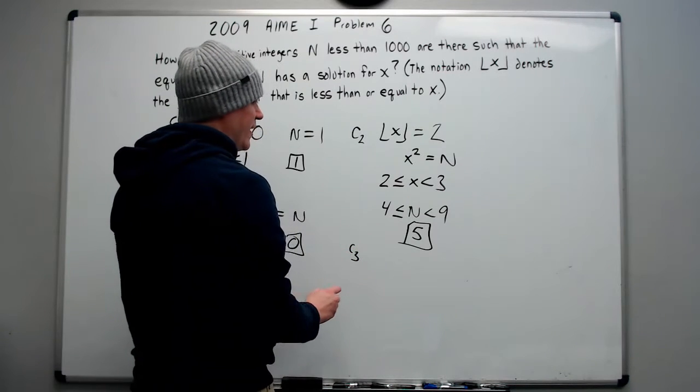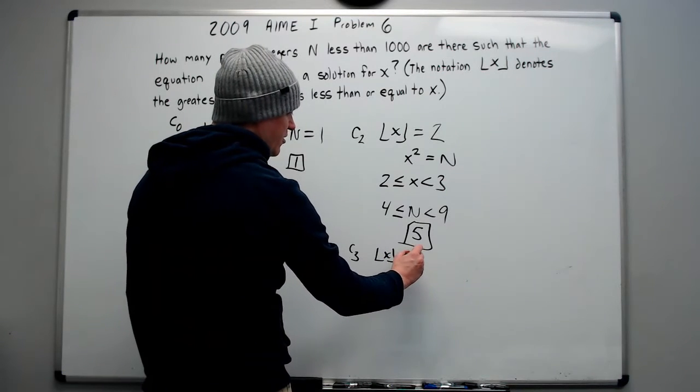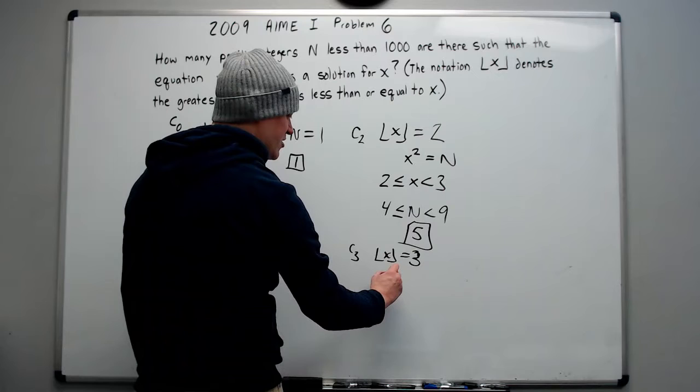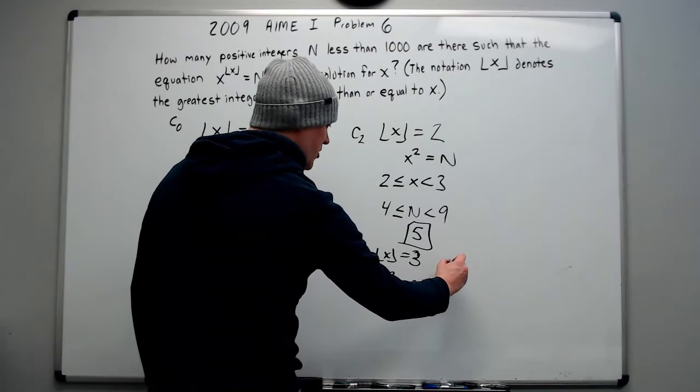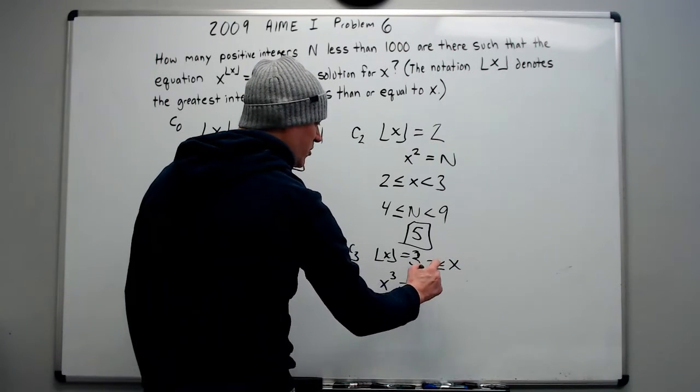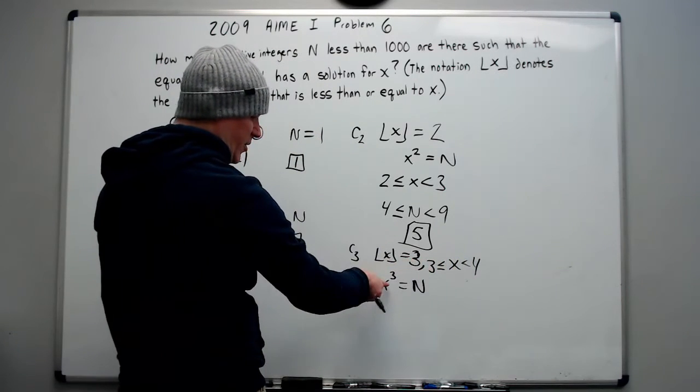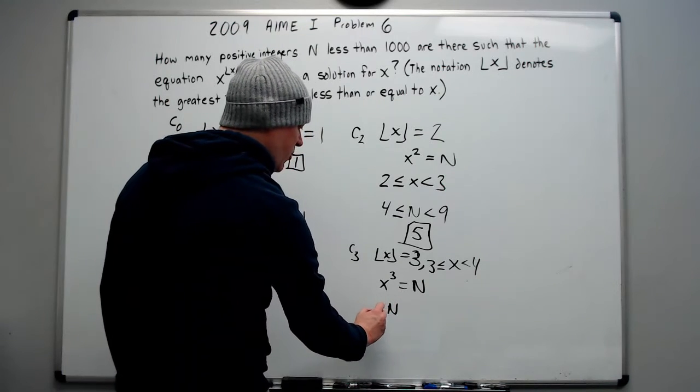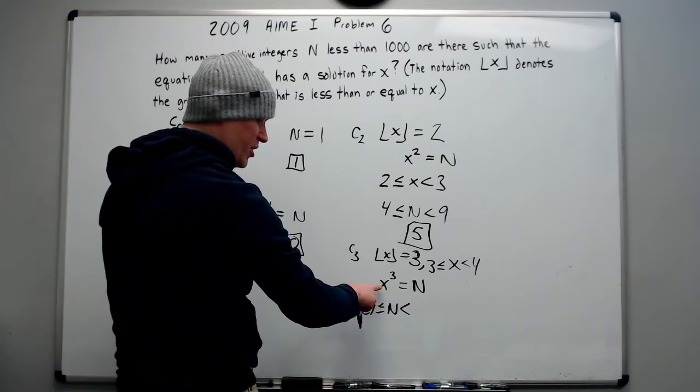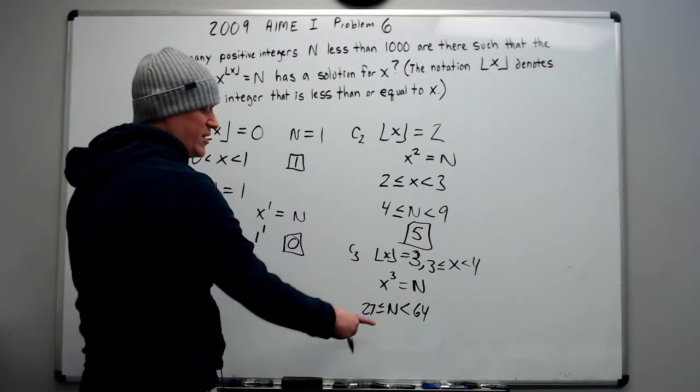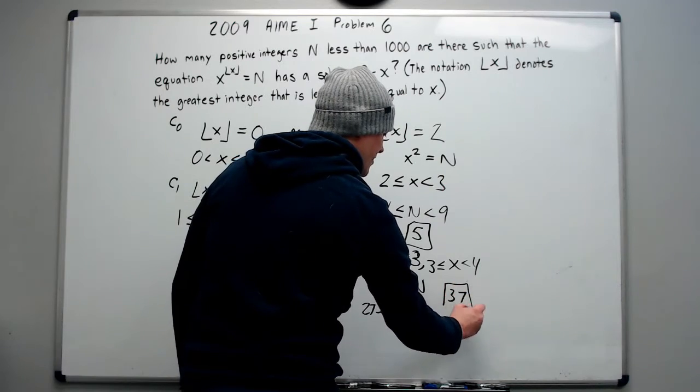Now keep in mind, this will mean that x squared is equal to n. And we know that if the greatest integer less than or equal to x is 2, that x is going to have to be greater than or equal to 2 but less than 3. And we can simply plug these into x squared to get that n is greater than or equal to 4 but less than 9. And so now we can check the values. They're 4, 5, 6, 7, and 8. But you can just do 9 minus 4 and you will get that there are 5 such values of n. Moving on to case 3.